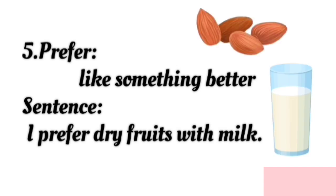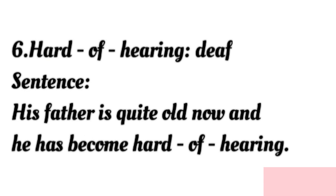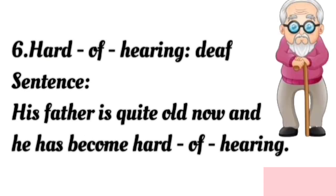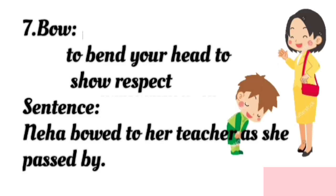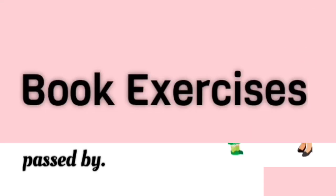Word: 'in vain' — meaning uselessly. Sentence: He searched in vain for his missing wallet. Word: 'prefer' — meaning to like something better. Sentence: I prefer dry fruits with milk. Word: 'hard of hearing' — meaning deaf. Sentence: His father is quite old now and he has become hard of hearing. Word: 'bow' — meaning to bend your head to show respect. Sentence: Neha bowed to her teacher as she passed by.